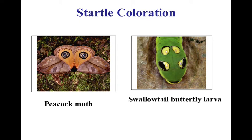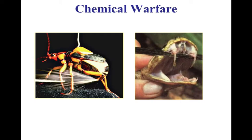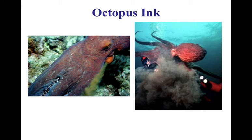Other animals use chemical warfare as counteracting behaviors. Snakes inject venom when they bite. The bombardier beetle can release a burning chemical at enemies. Skunks spray a foul-smelling oil. Octopuses release ink when threatened, creating a disorienting smoke cloud in the water that confuses attackers.